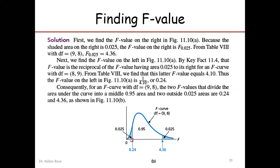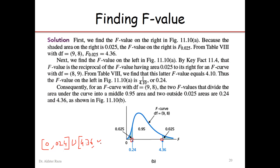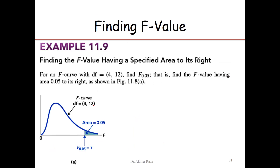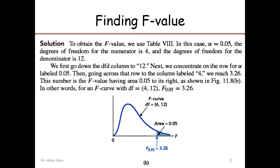The two critical points are 1/4.10 = 0.24 and 4.36. The critical region interval can be written as (negative infinity to 0.24] union [4.36 to positive infinity), where infinities are always open brackets. For the right-side test with degrees of freedom 4 and 12, the value directly from the F table is 4.26, so the critical interval is [3.26, infinity).